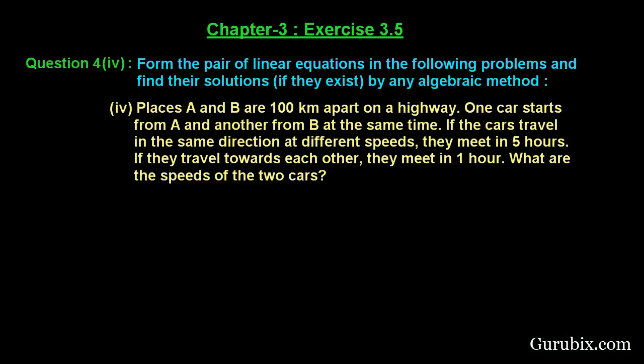Welcome friends. Here is a very important question of the chapter — this is the fourth part of question number four of exercise 3.5 of chapter 3. The question says: form the pair of linear equations in the following problem and find the solution if they exist by any algebraic method. The problem is: places A and B are 100 kilometers apart on a highway. One car starts from A and another from B at the same time. If the cars travel in the same direction at different speeds they meet in five hours; if they travel towards each other they meet in one hour. What are the speeds of the two cars?